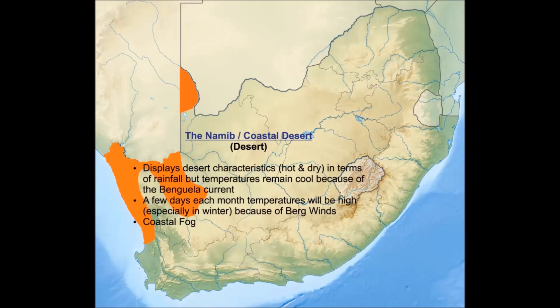The Namib or coastal desert is classified as desert in terms of low rainfall, but with low temperatures due to the cold Atlantic Ocean and Benguela Current. Other noteworthy characteristics are berg winds occurring in winter and coastal fog. Berg winds occur when air flows from the interior down the escarpment, warming up as it descends and reaching the coast as a hot dry wind.